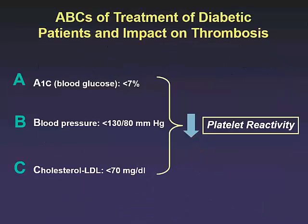To conclude, ladies and gentlemen, I've focused on differences in treatments, newer strategies, and genetics. I'd also like to highlight that we should not lose sight of the ABCs for our patients with diabetes: A — reduce hemoglobin A1C levels; B — blood pressure; C — cholesterol. As all of these are addressed, we also reduce platelet reactivity. Thank you very much for your attention.